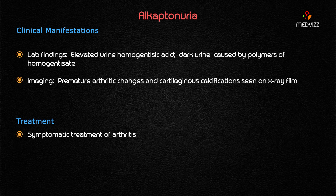To summarize alkaptonuria for exam purposes: dark urine is caused by polymers of homogentisic acid. It is an autosomal recessive disorder with a mutation on chromosome 3. The deficient enzyme is homogentisic acid oxidase, which is relatively straightforward to identify.